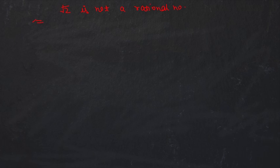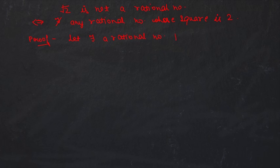We will now prove that √2 is not a rational number, or equivalently, there does not exist any rational number whose square is 2. We use proof by contradiction: assume there exists a rational number p/q such that (p/q)² = 2.